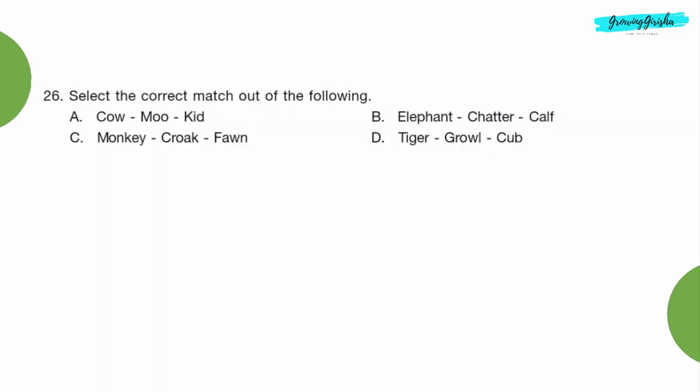Question 26: Select the correct match out of the following. Option D, tiger, growl, cub.